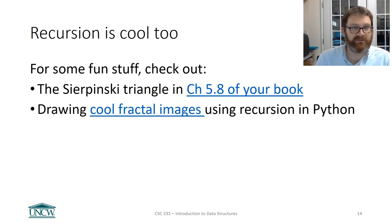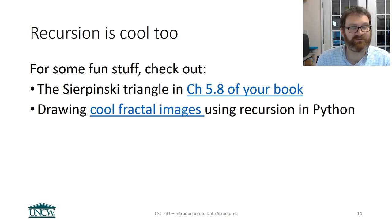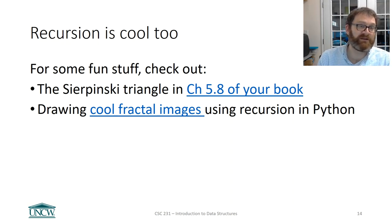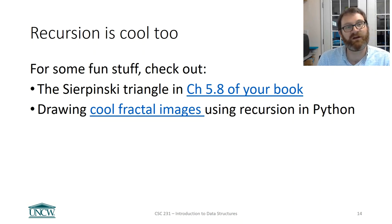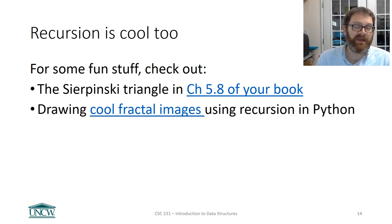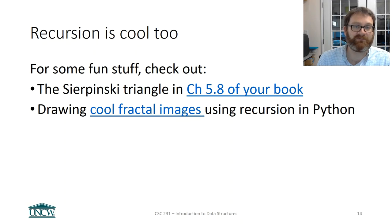There are some cool things you can do with recursion visually. Check out chapter 5.8 of your book — they show you how to draw a Sierpinski triangle, a recursive structure using the turtle library. Fractals have a very natural recursive definition; there's a link to cool fractal images created in Python you can try yourself. That's it for recursion. We'll see it again when we talk about sorting, and when we get into our final data structure — trees and binary search trees. Have a good weekend, stay safe.